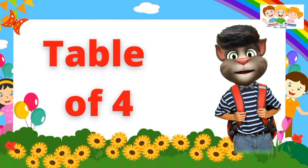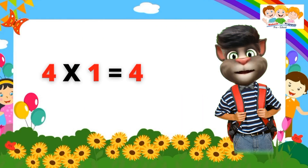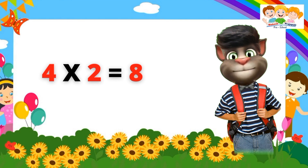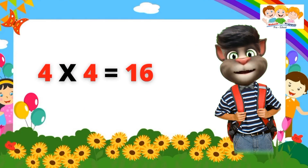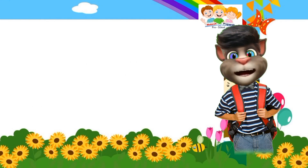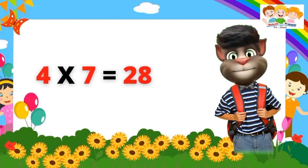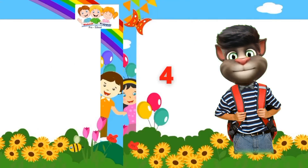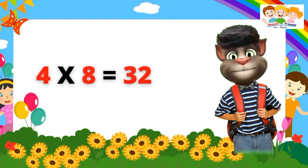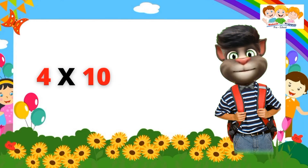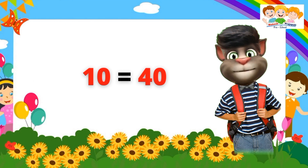Table of Four. Four one's are four. Four two's are eight. Four three's are twelve. Four four's are sixteen. Four five's are twenty. Four six's are twenty-four. Four seven's are twenty-eight. Four eight's are thirty-two. Four nine's are thirty-six. Four ten's are forty.